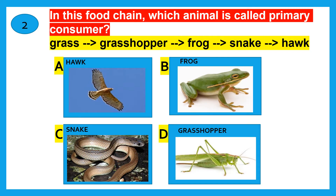In this food chain, which animal is called primary consumer? Hawk, frog, snake, grasshopper? The correct answer is grasshopper.